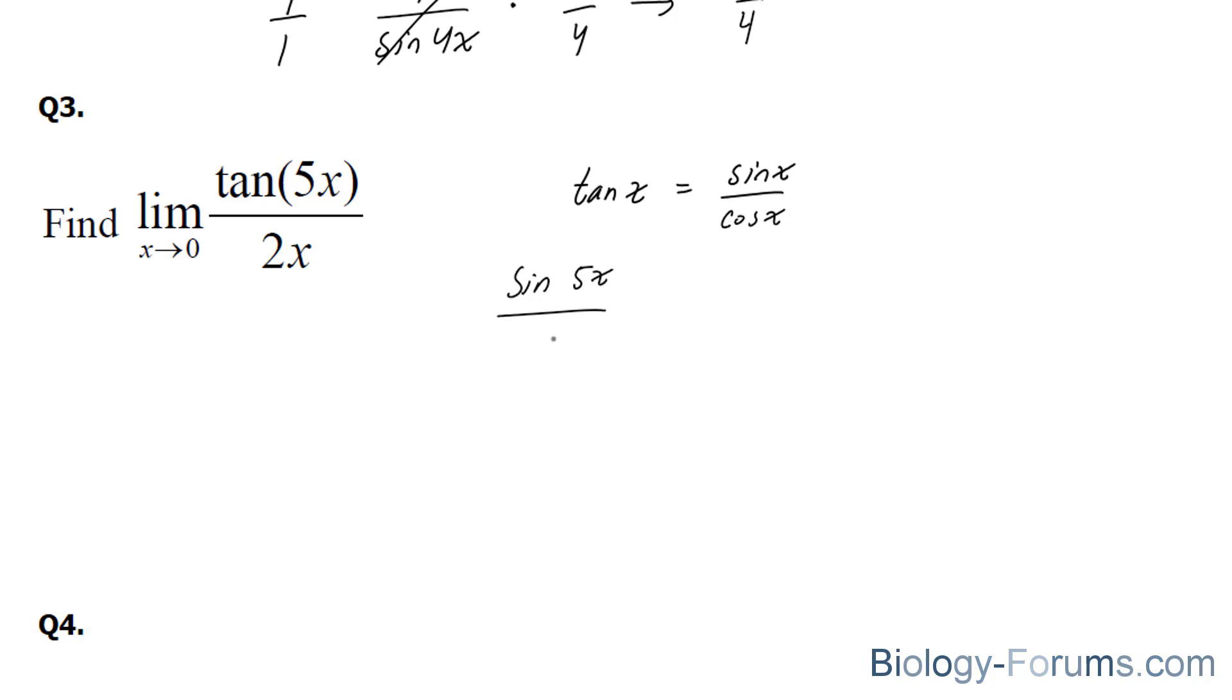So sine 5x over cosine 5x over 2x. If we rearrange this and simplify it, we end up with sine 5x over cosine 5x times 1 over 2x. Now in case you don't know why that is, remember a over b divided by c becomes a over b times 1 over c. So that's the logic behind it.